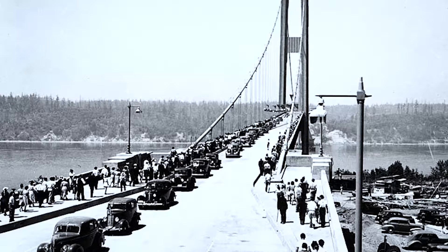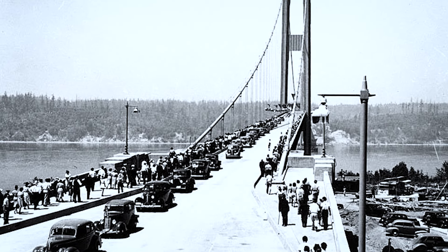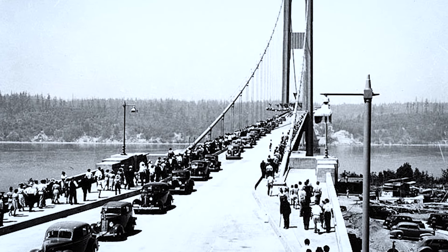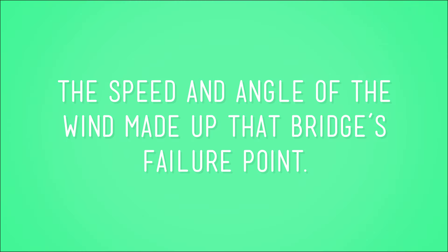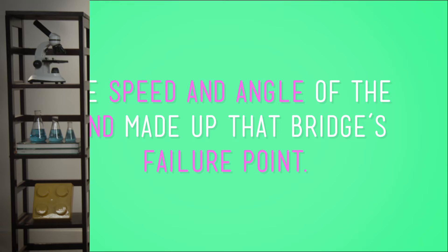But there are more possible failure points than not being able to support enough weight. Remember the Tacoma Narrows Bridge? It was a perfectly fine solution to the problem of getting people across Puget Sound — at least until the wind picked up and hit the bridge at a certain angle. Then the bridge became good old Galloping Gertie, twisting in the wind until it collapsed. In that case, the speed and angle of the wind made up the bridge's failure point.